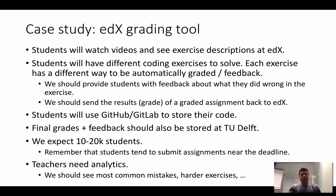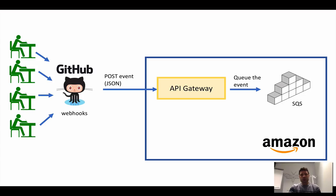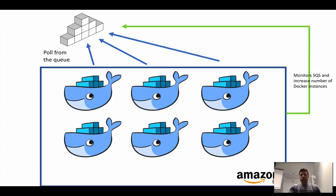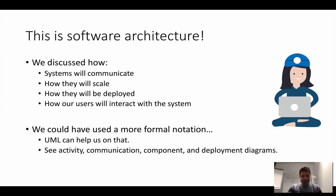I gave you a case study about a tool we were building. The tool was focused on grading online students — students do assignments and then we give them grades. I discussed how we decided to organize things: how GitHub talks to our software, how we then grade the students, and how we make these things scalable. This is software architecture — discussing how our system behaves from a high-level perspective and how the different components talk to each other.